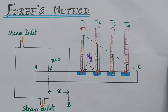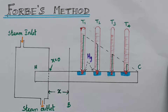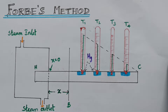We will cover the description, working, and steady state temperature. There are two processes: one is the static experiment process, and the second one is the dynamic experiment process. We will find the thermal conductivity of a good conductor.